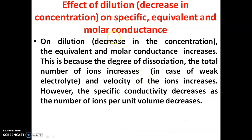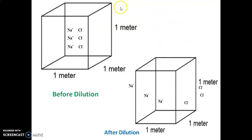In summary, on dilution: both molar and equivalent conductance increase because the degree of dissociation and total number of ions increase for weak electrolytes, and the total velocity of ions increases in both strong and weak electrolytes. But specific conductance decreases because the number of ions per unit volume decreases, leading to decreased mobility and therefore decreased specific conductance.